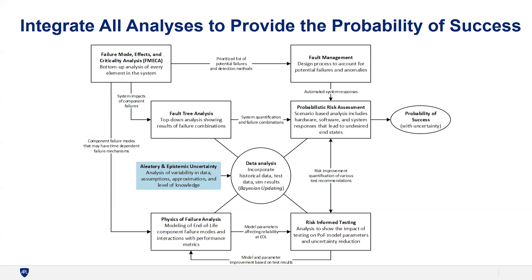My last slide: I'll leave with a vision of how all these reliability analyses can fit together and should fit together. Ultimately, we want some understanding of probability of success. There are lots of different failure and reliability analyses that go with that — FMEAs, fault management teams, fault tree analysis, PRAs. All of this relies on data. The idea is that putting physics of failure modeling in the mix here basically directs and informs where these analyses should take place and how they all start to interrelate.